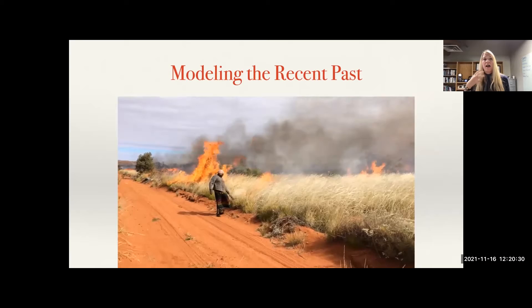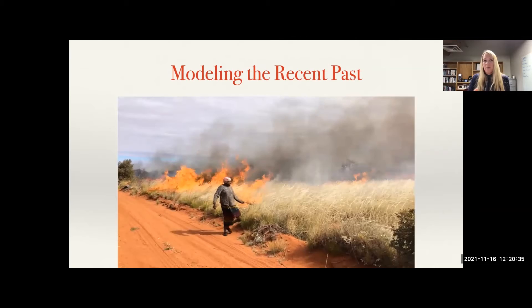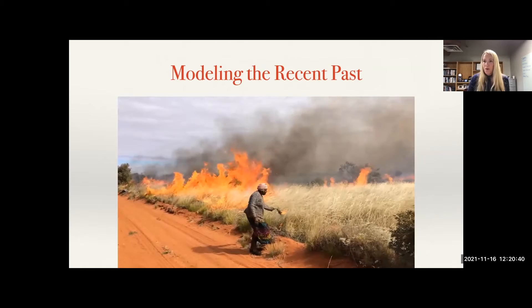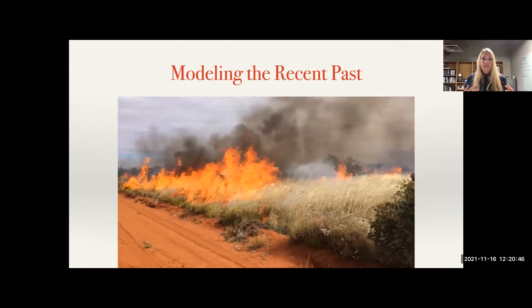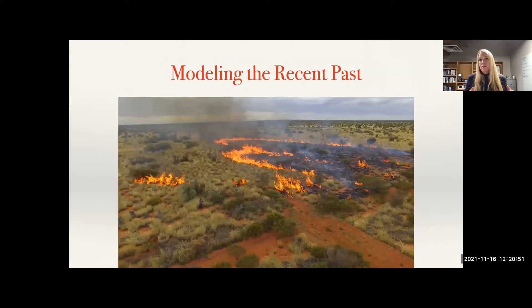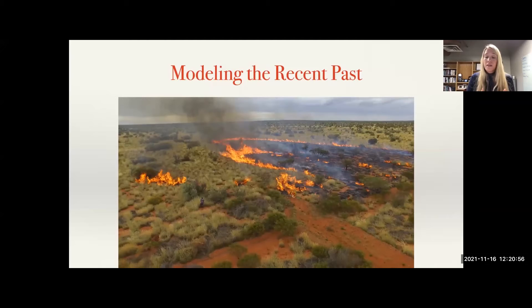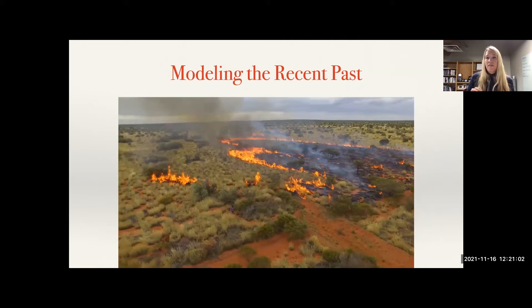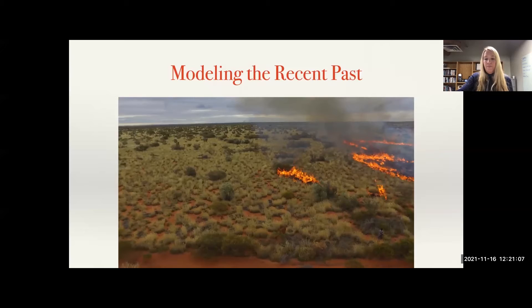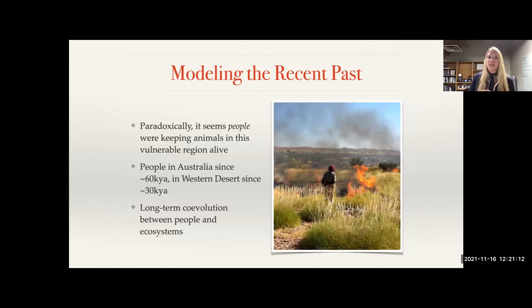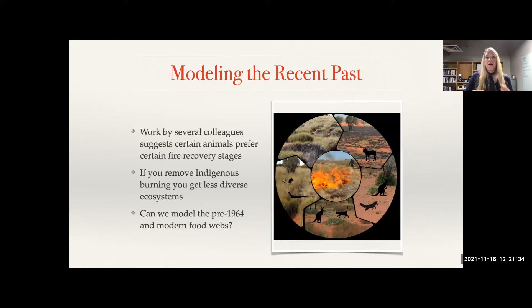Between the 1960s and 1980s, several small animals in this region went extinct — such as the Mala, the Rufus Hare Wallaby, which was ubiquitous in arid zones and extinct on the mainland by the 1970s. Why? What happened is that people stopped burning. People in the wintertime burned small-scale one-to-five hectare fires to create a patchy landscape for hunting — critical for landscape patchiness. We wanted to learn whether we could understand these extinctions of small-bodied mammals by looking at what happens when you remove Mardu from the food web. People were in Australia since 60-70,000 years ago and in the western desert since 30,000 years ago, suggesting long-term co-evolution between people and ecosystems.